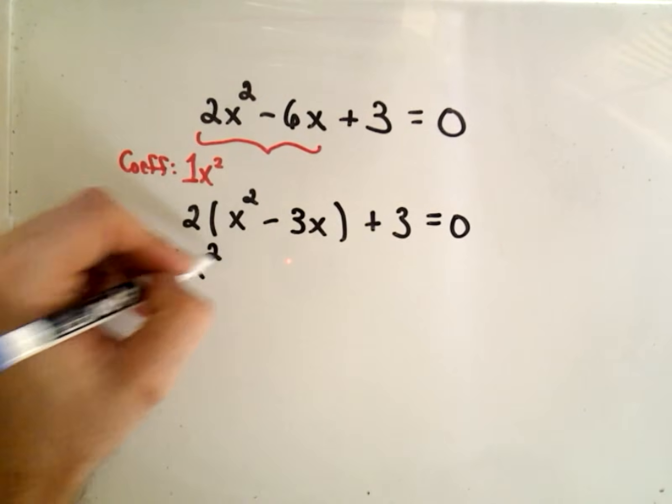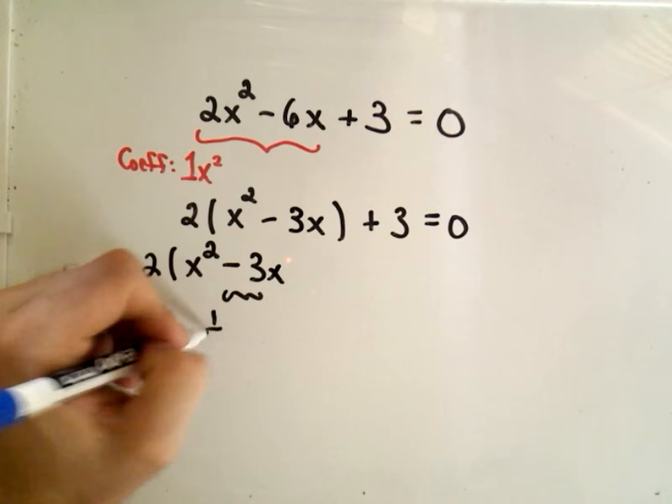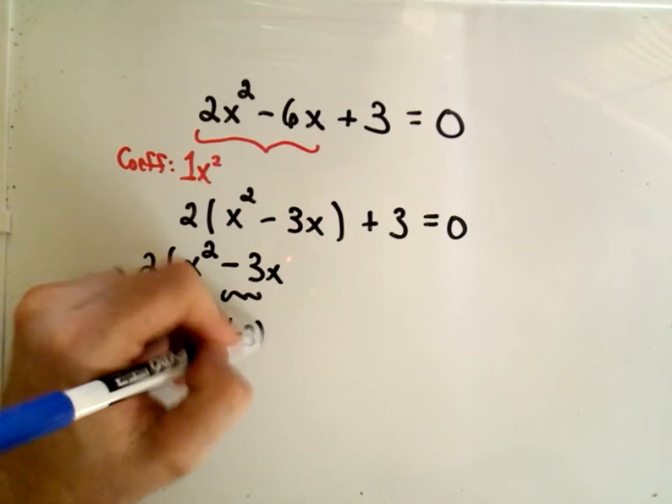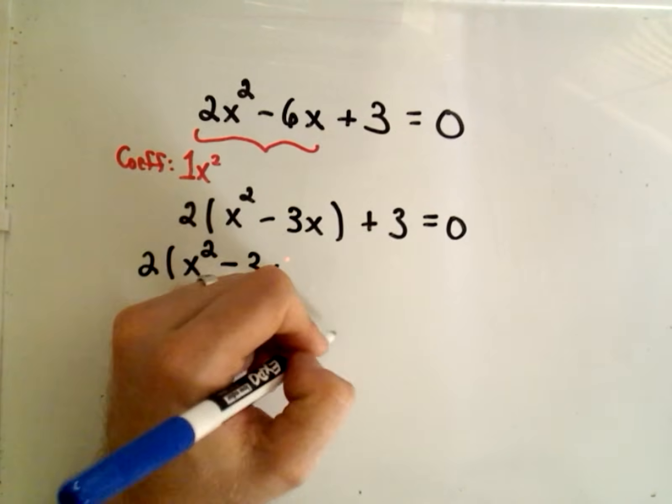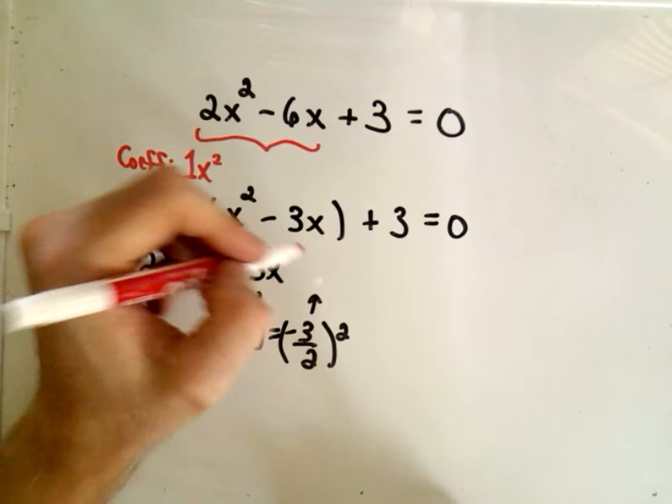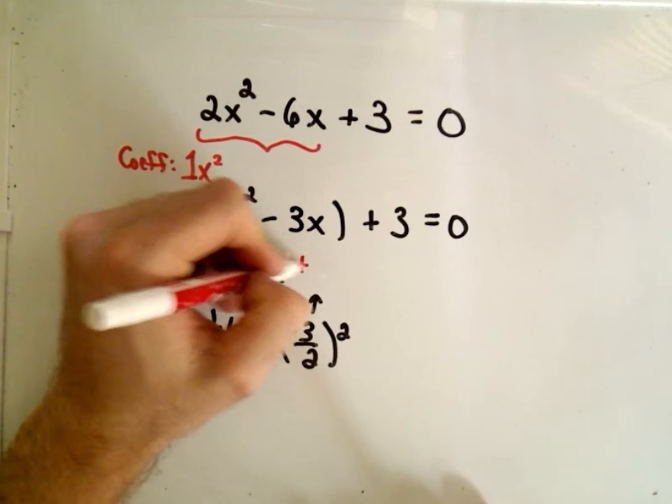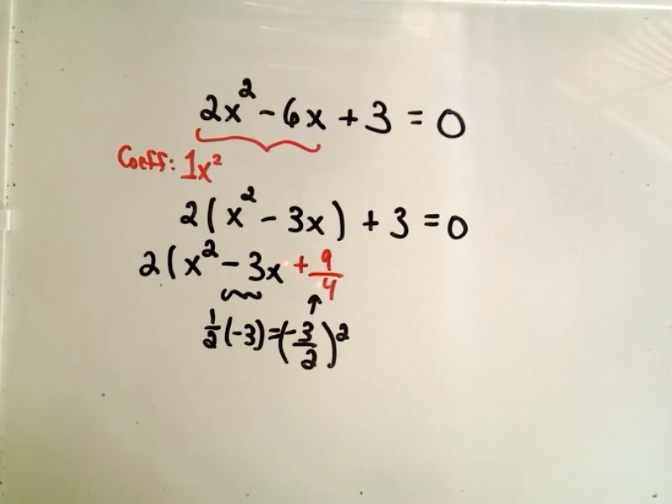And then what we do, just like in the other video, is we take 1 half of the number, which is negative 3, and that will give us negative 3 halves. We square that and put it back inside. So the number that's going to go back inside here is actually going to be positive 9 over 4, because that's negative 3 halves times negative 3 halves.